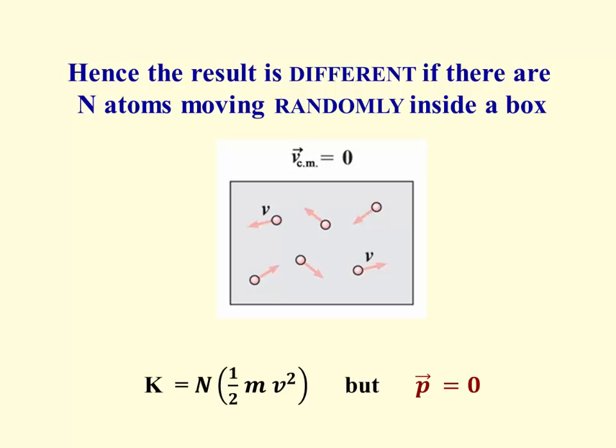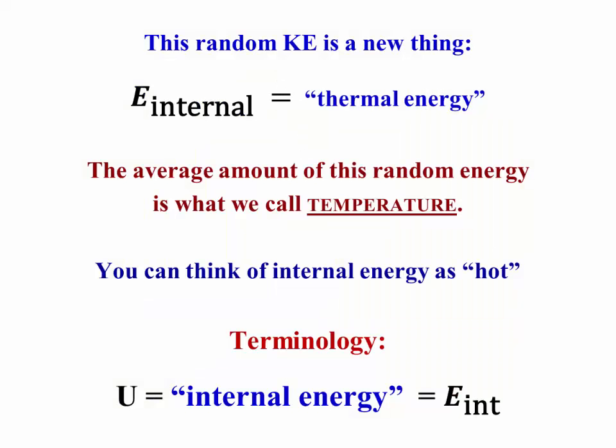And we just get n times m times ½v². This random kinetic energy is a completely new kind of thing, and we refer to it as internal energy or thermal energy. The average amount of this random energy is what we call temperature. As a result, it's useful to sometimes think of internal energy as hot. That's to distinguish it from heat. Hot means something at a high temperature, something that has a lot of internal energy.